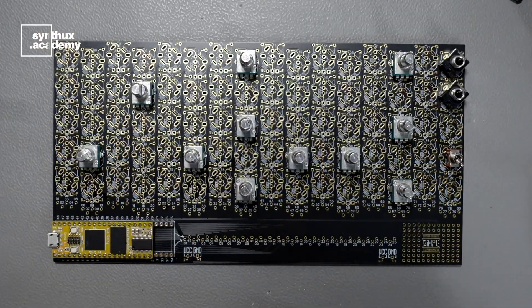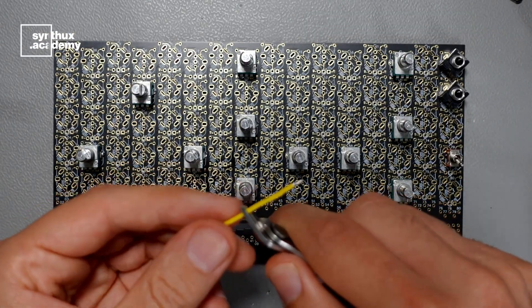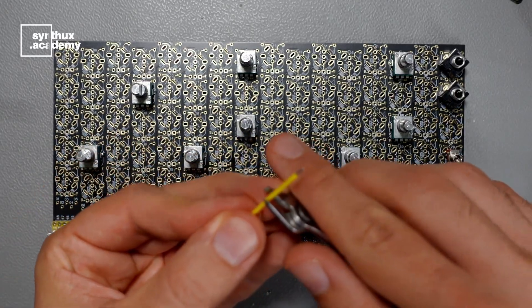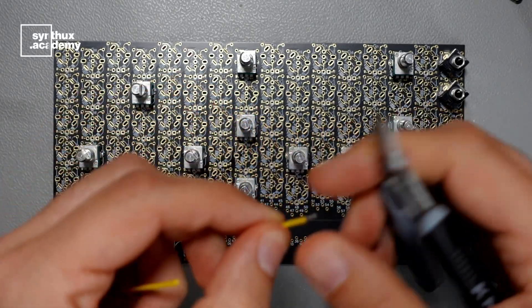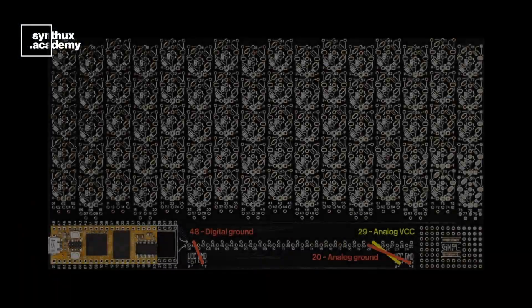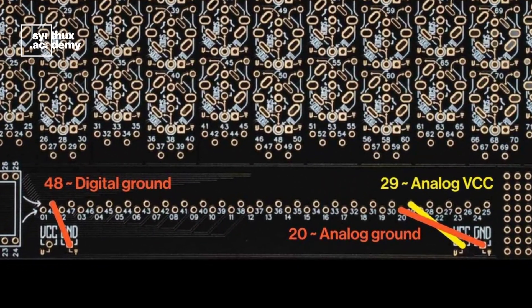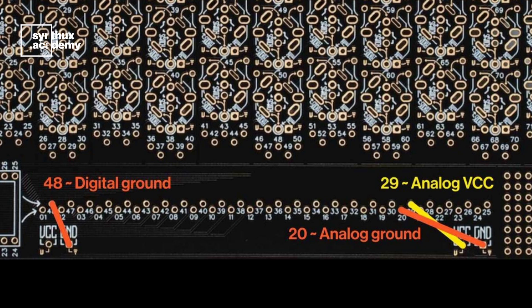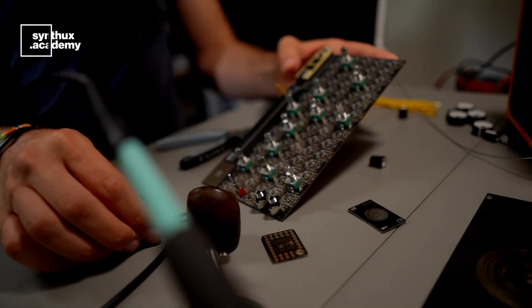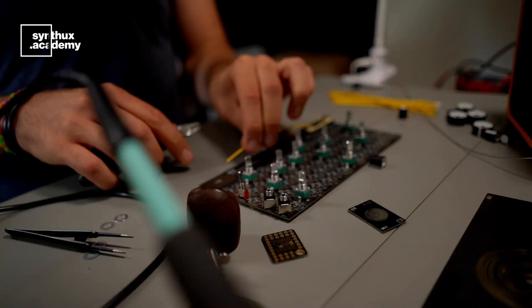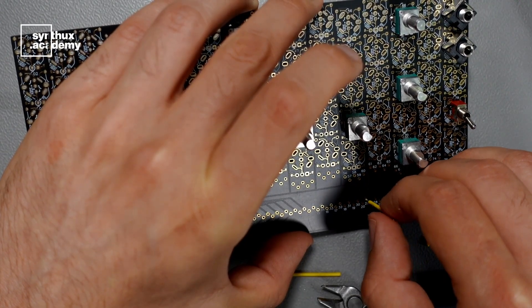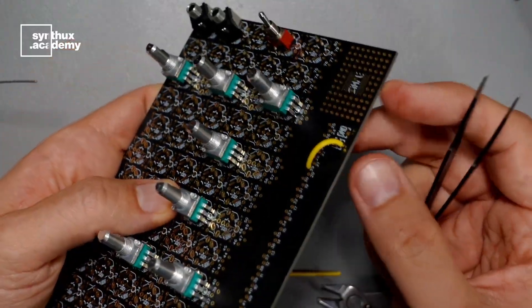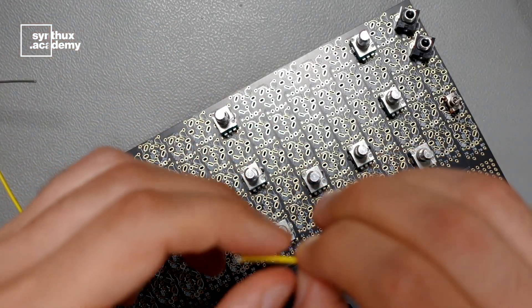Okay, the next step is to take the yellow wires that came with the kit and connect them all based on the diagram on GitHub. The first thing we need to do is to connect the ground. We have two grounds, digital and analog, and we have VCC. The ground on the left is going to be connected to pin 48. VCC to pin 29. And the ground on the right is going to be connected to pin 20.